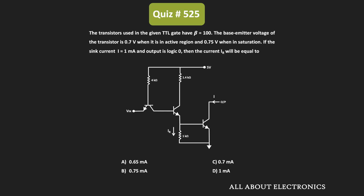Moreover, the base-emitter voltage of these transistors is equal to 0.7V when they are operating in the active region, and that is equal to 0.75V when they are operating in saturation. So here we have been asked to find the current IR when the output is equal to logic zero, and at that time this same current is equal to 1mA.